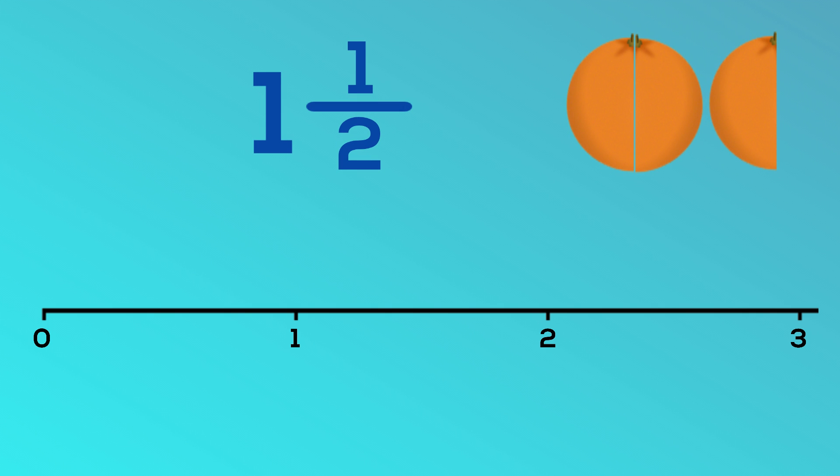Here's our mixed number from before. It shows one whole. Let's find one whole on our number line. Here it is. But we're not quite finished because this is a mixed number and as well as the one whole, it has one half.